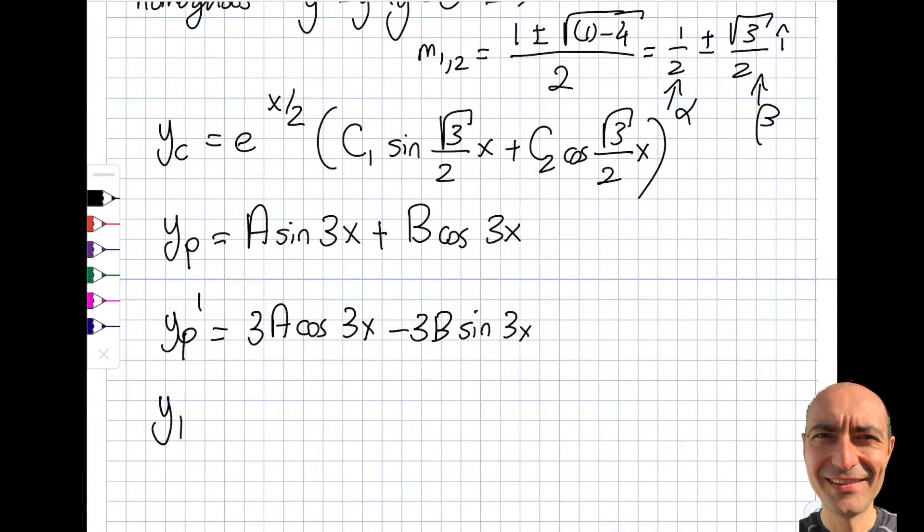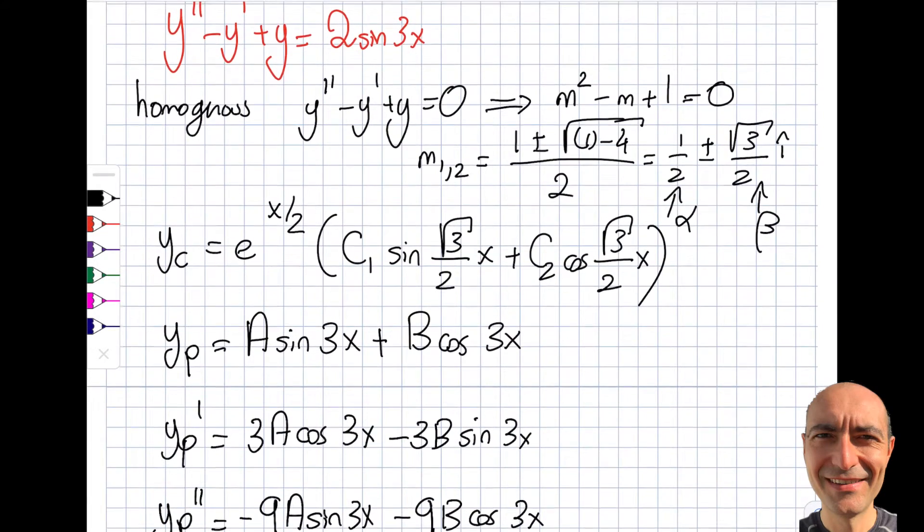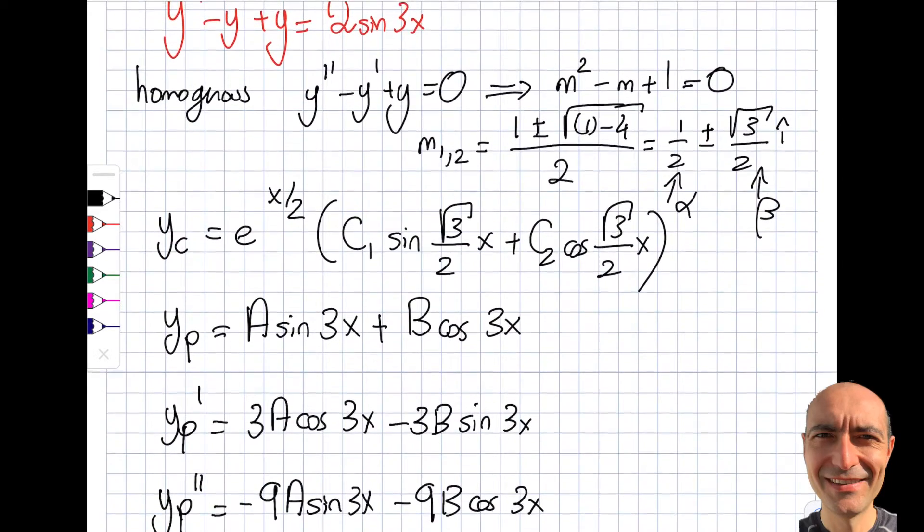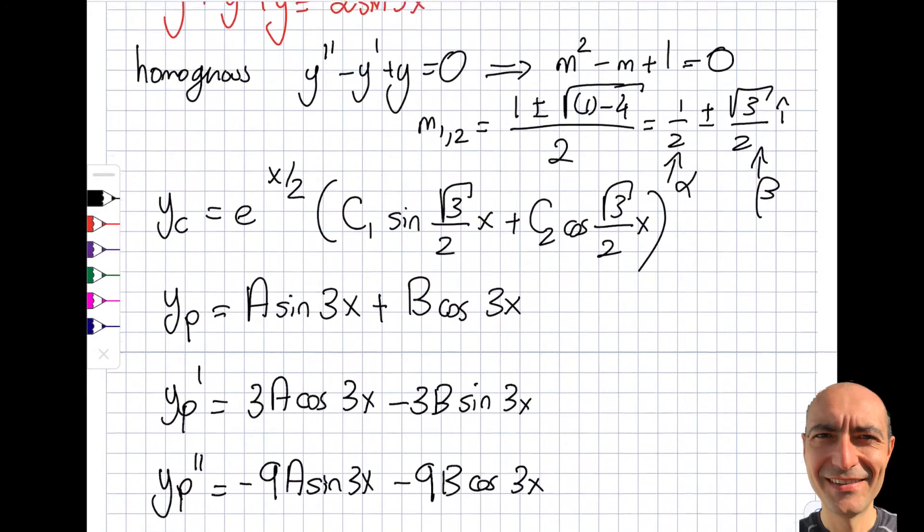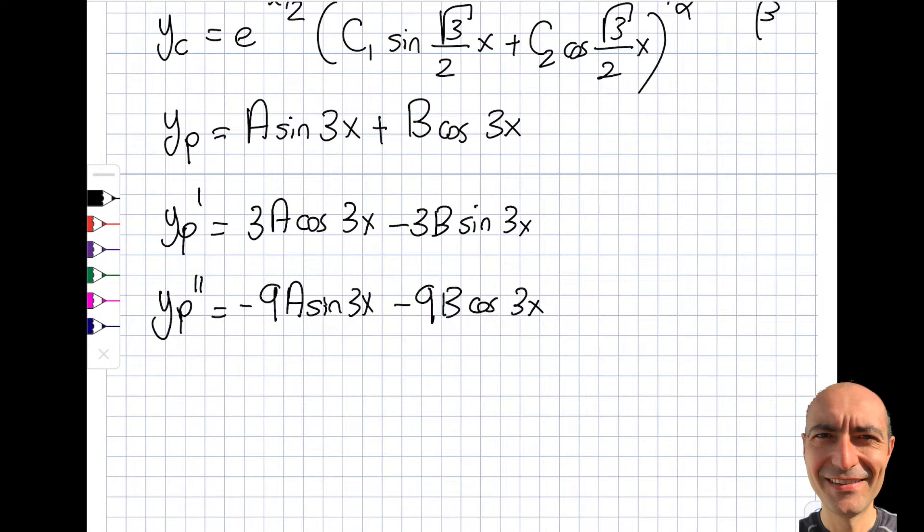I should keep going with the second one because that's given to me higher order. So I'm going to get myself minus 9a sine 3x minus 9b cosine of 3x. Okay, so far so good. Then I will go back to my equation and plug this yp double prime, yp prime and yp itself and see what happens.